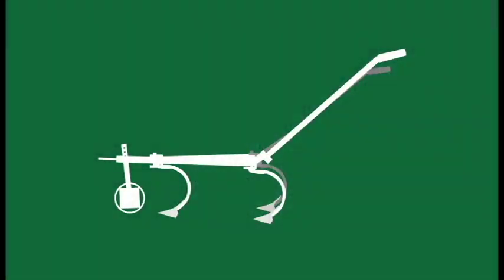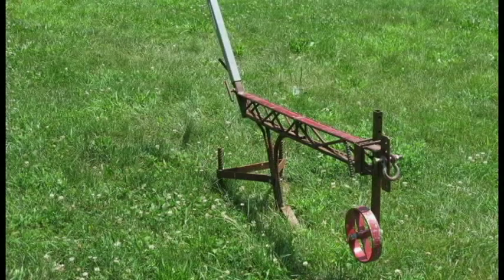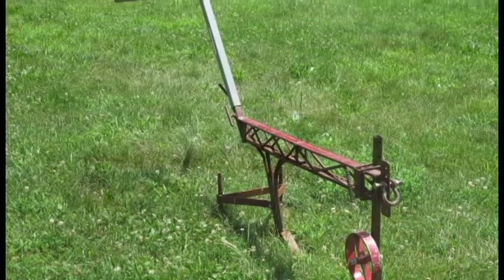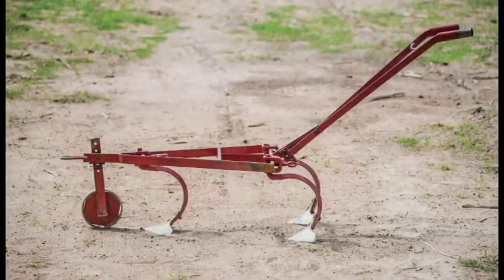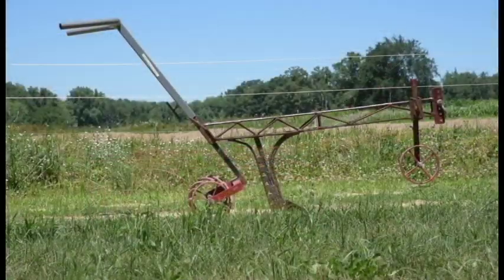The weeder is designed to be pulled between crop rows to cut off weeds just below the soil surface. The main part of the weeder is the sweeps. There are many different configurations of weeders, but most have three sweeps.